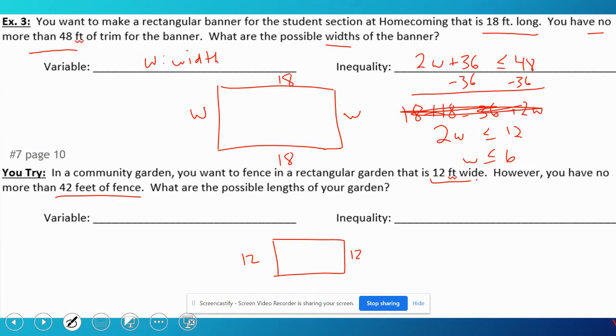So no more than 42 means I can use 42, but I have to be less than or equal to that. What are the possible lengths of your garden? So I'm going to call l my length. And so the total amount needed of fence would be 12 plus 12, which is 24, plus 2l. Some people often forget the 2 there—that's why you want to make a picture.